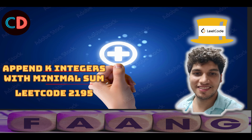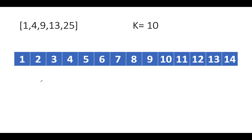LeetCode 2195 'Append K Integers with Minimal Sum' is a medium-level question. It has a small trick associated with it. I've taken a slightly different example: the elements are [1, 4, 9, 13, 25] and the value of k is 10, meaning we want to append 10 new integers into this input array.